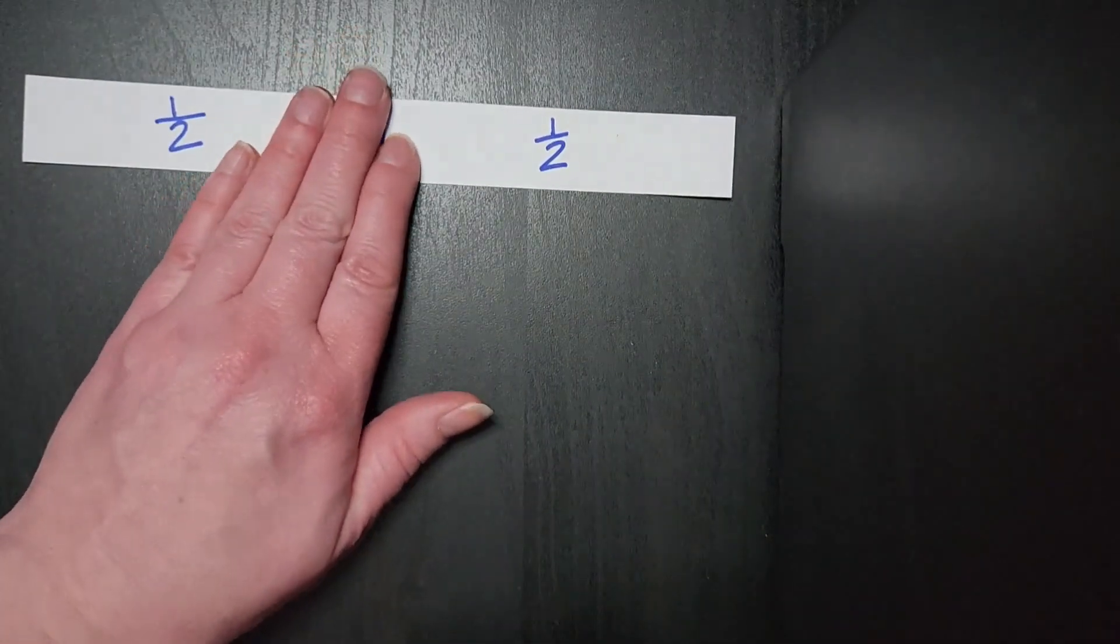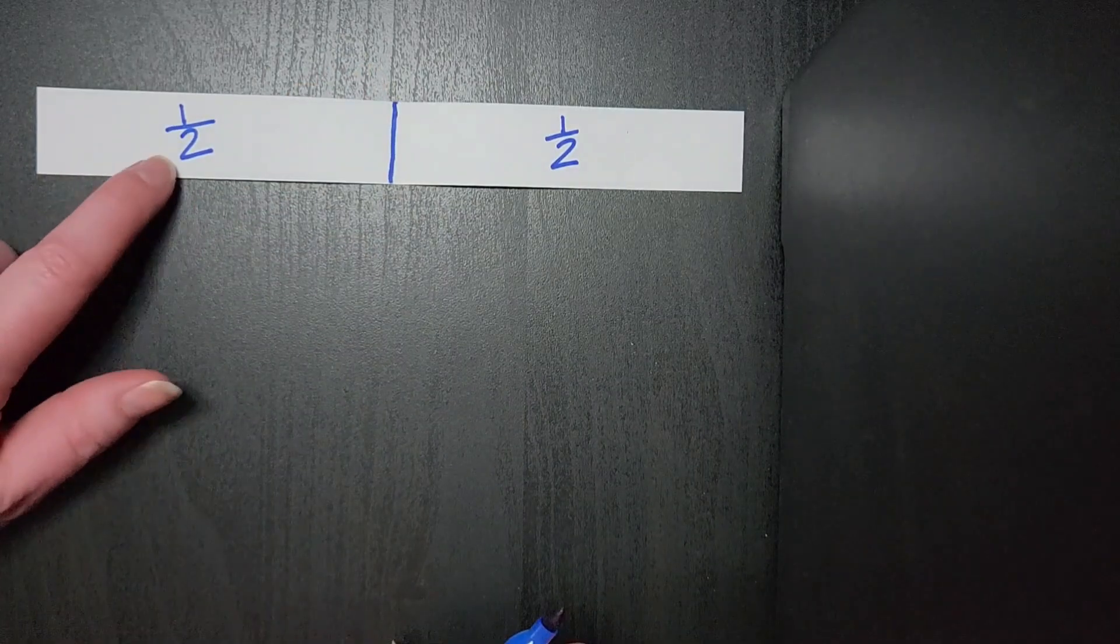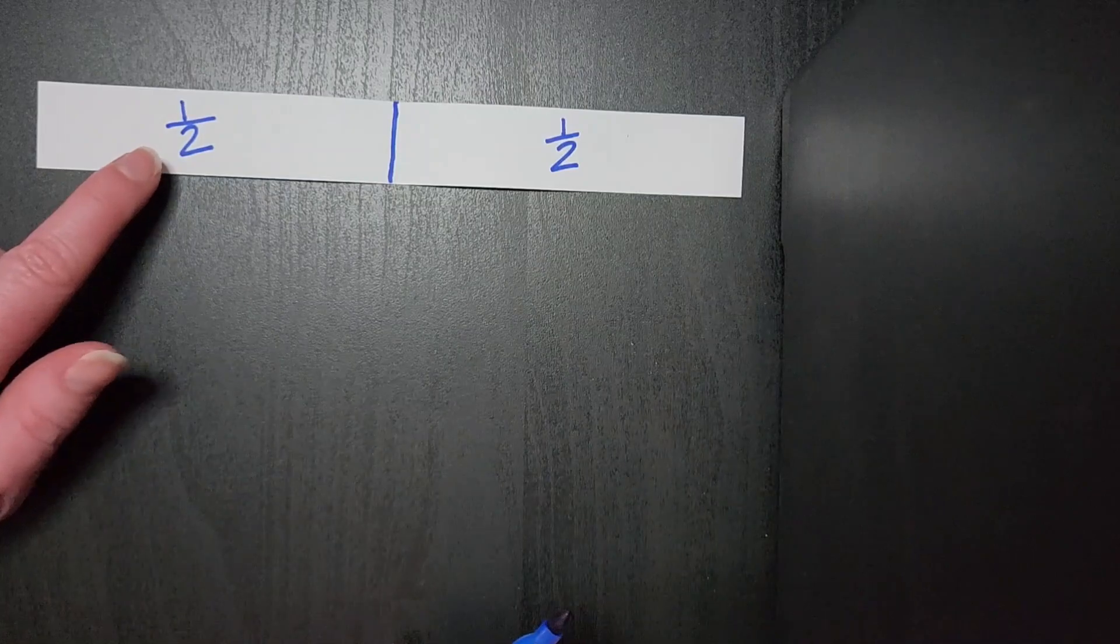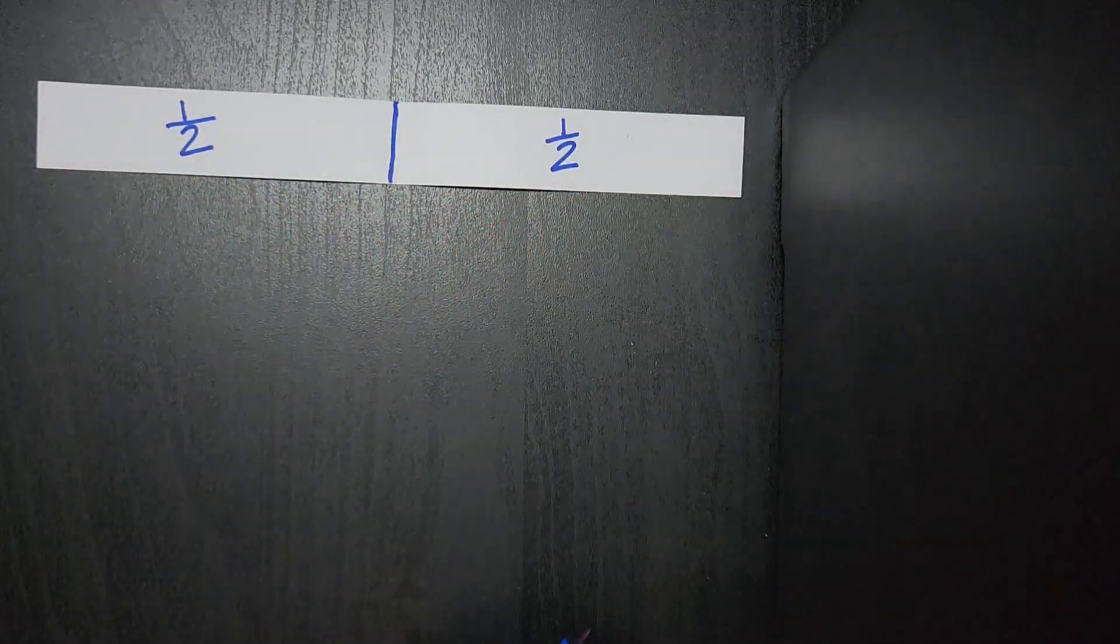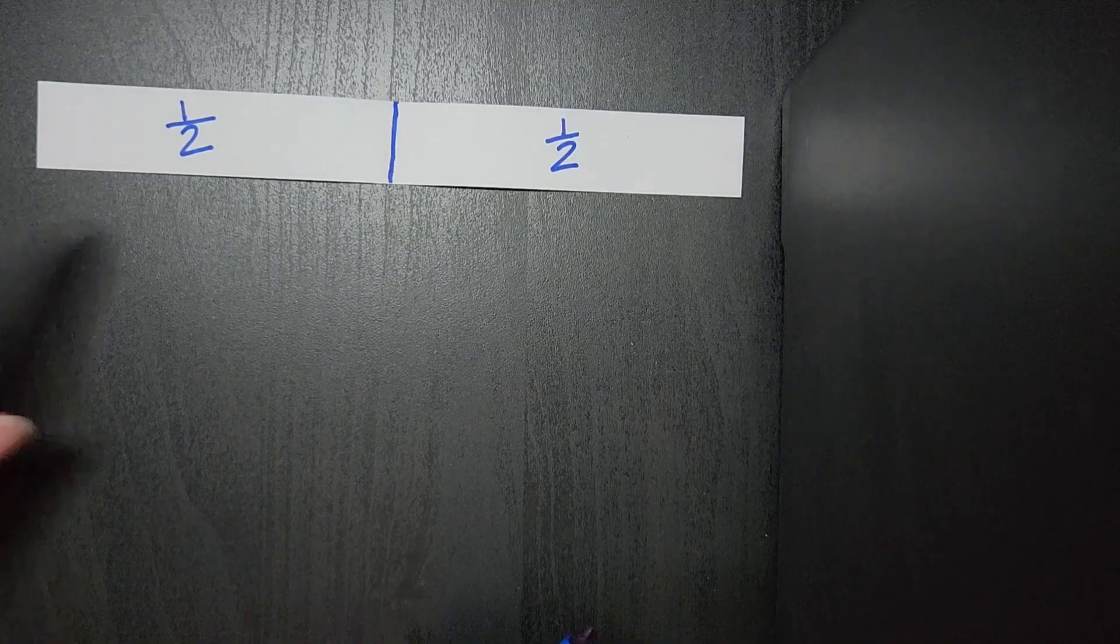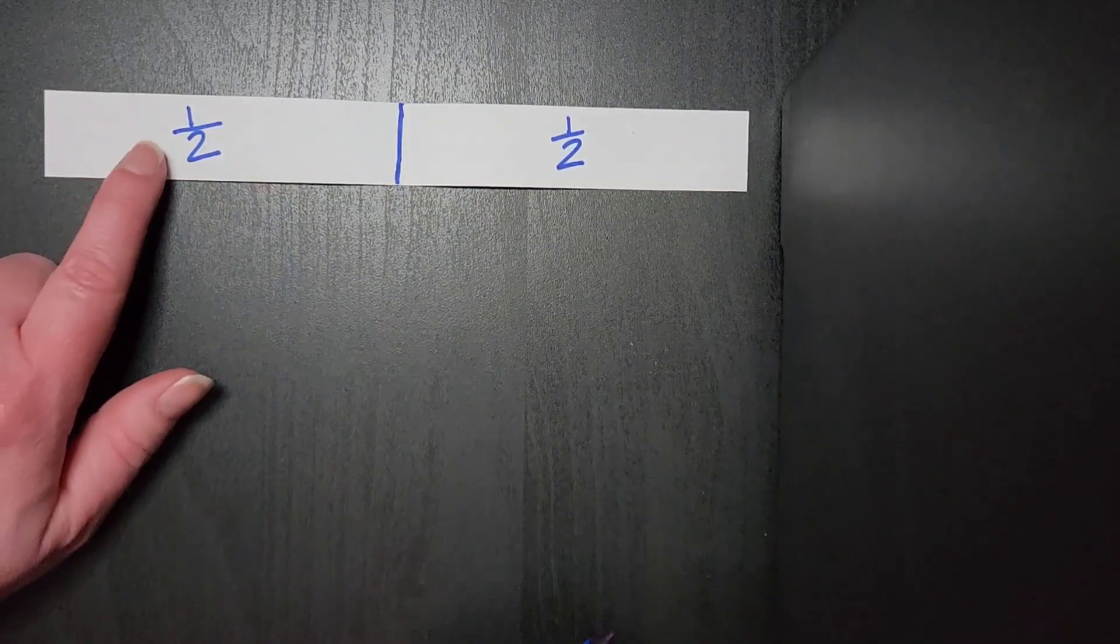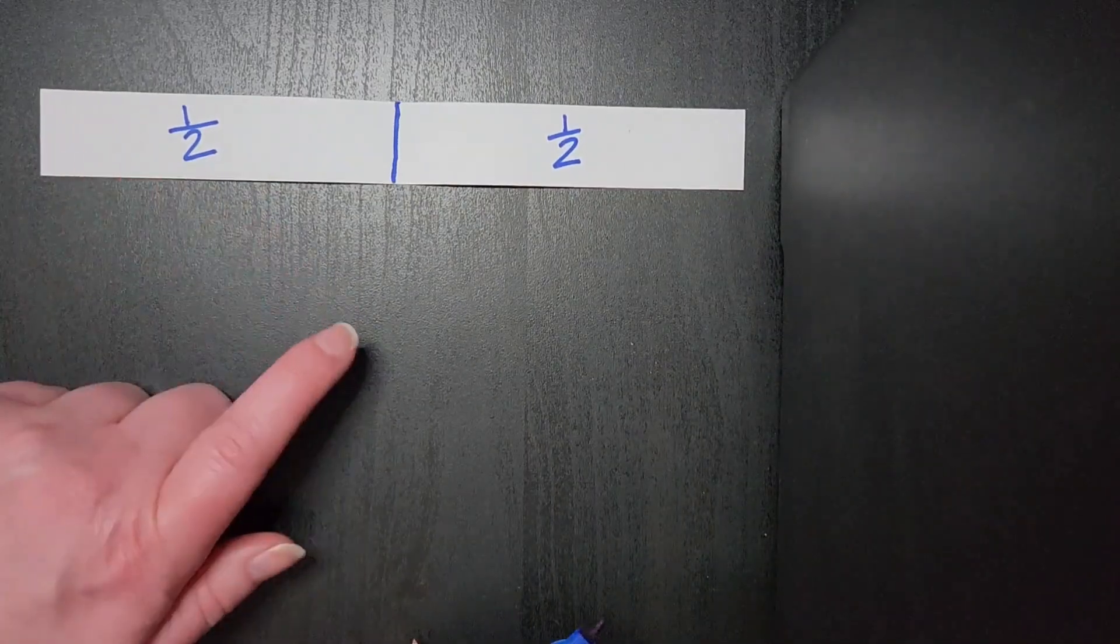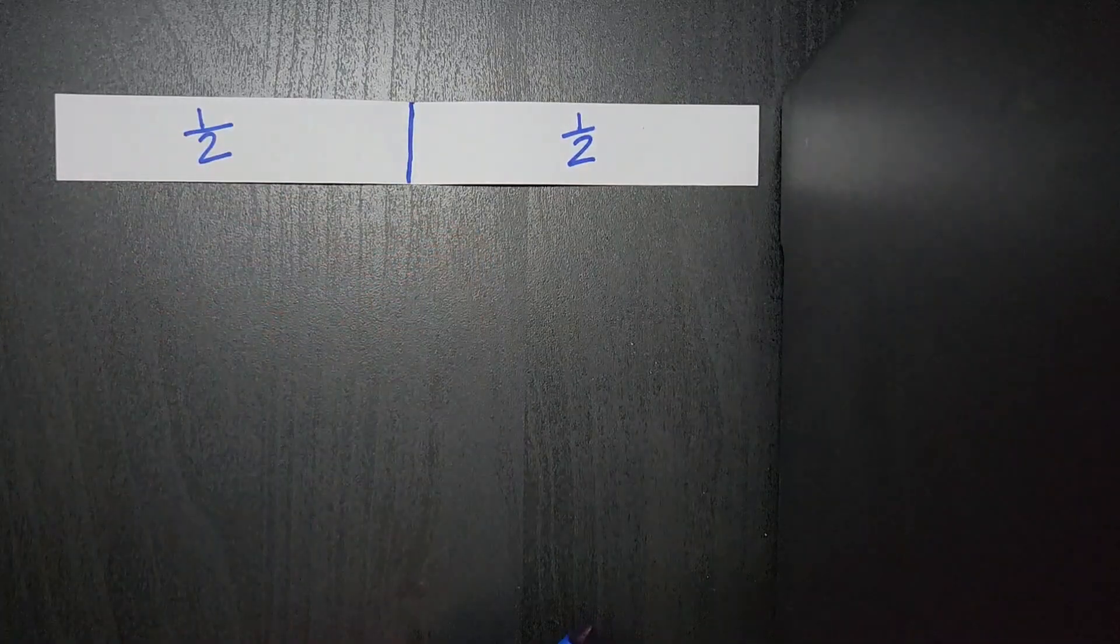So we label this as a half, and we glue it down. It is at this time that I talk about the vocabulary word of unit fraction. That each of these pieces are the same size. And so we talk about how the unit fraction tells me the size of the pieces in the hole, and how every piece is the same size. So each unit is the same size.